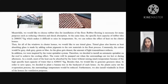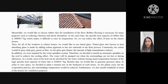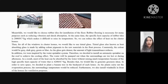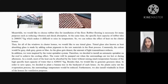Meanwhile, we would like to choose rubble tiles for insulation of the floor. Rubble flooring serves many purposes such as reducing vibration and shock absorption. The specific heat capacity of rubble tiles is 2,000 J per °C per kilogram, which makes it difficult to raise its temperature, so we can reduce the effect of heat on the cluster homes.